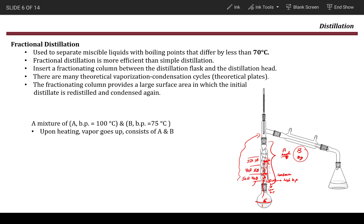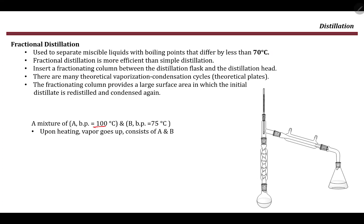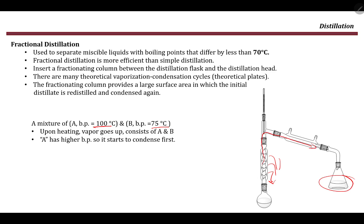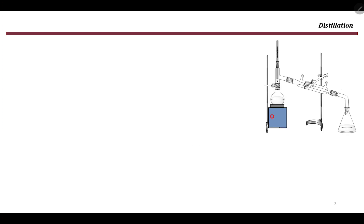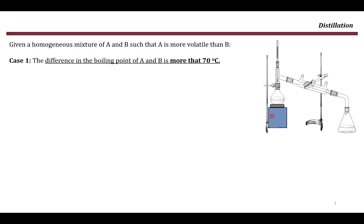For example, if we have a mixture where compound A boils at 100°C and compound B boils at 75°C, upon heating the vapor of both A and B will go up. However, A, which has the higher boiling point, is the heavier molecule and will start to condense quickly and fall back down, while B, the lighter molecule, will continue upward and be collected. So if A is more volatile — meaning A has the lower boiling point — and the difference is more than 70 degrees, A will evaporate first.